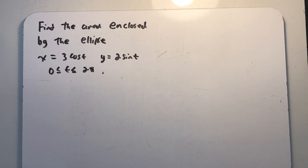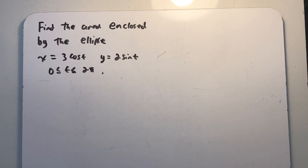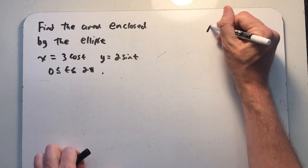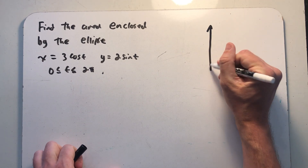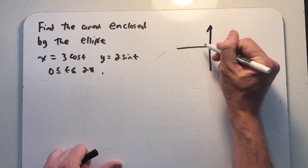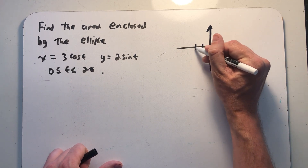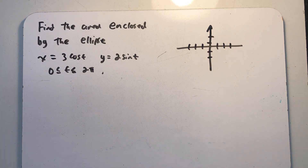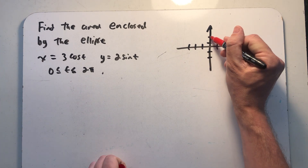We've been asked to find the area enclosed by the ellipse given by the parametric equations x equals 3 cosine t and y equals 2 sine t, graphing the whole ellipse between 0 and 2π. On the x-axis it bounces between 3 and minus 3, and on the y-axis between 2 and minus 2, so we can graph the ellipse very quickly.